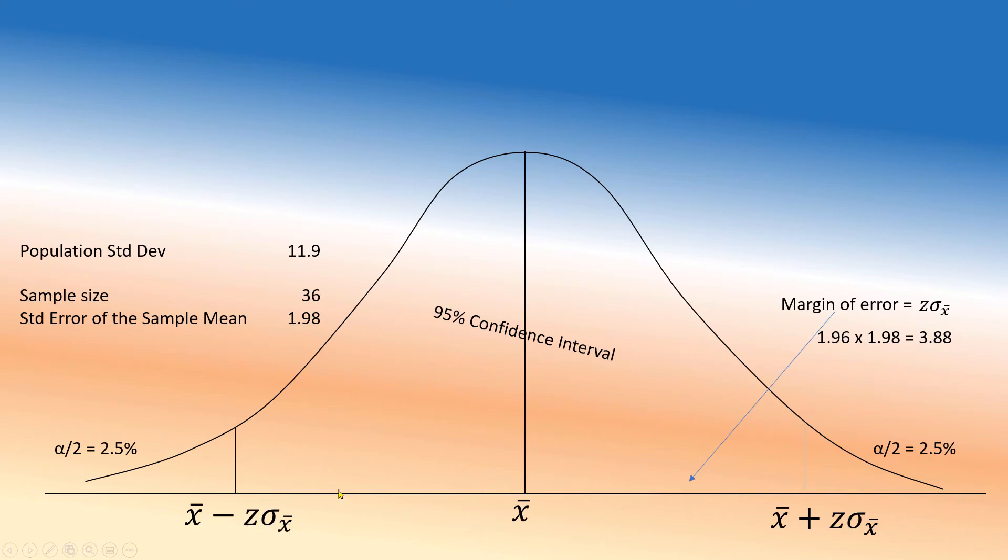This will be x-bar plus z sigma x-bar, x-bar minus z sigma x-bar. What is z? z is 1.96. And sigma x-bar 1.98. So whatever x-bar we get, we'll have an interval that will be x-bar plus minus z sigma x-bar. And this is called margin of error. So that's margin of error which is in our case 1.96 times sigma x-bar which is 1.98, so 3.88.